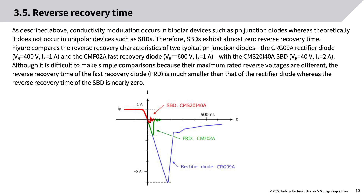Conductivity modulation occurs in bipolar devices such as PN junction diodes, whereas theoretically it does not occur in unipolar devices such as SBDs. Therefore, SBDs exhibit almost zero reverse recovery time. A comparison of the CRG09A rectifier diode (VR = 400V, IF = 1A), the CMF02A fast recovery diode (VR = 600V, IF = 1A), and the CMS20I40 SBD (VR = 40V, IF = 2A) shows the FRD has much smaller reverse recovery time than the rectifier diode, while the SBD's reverse recovery time is nearly zero.